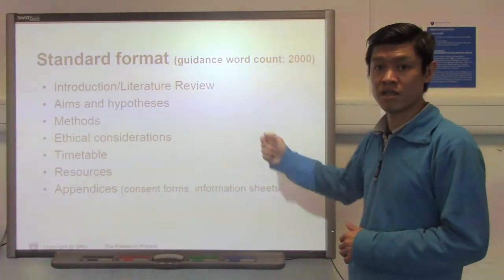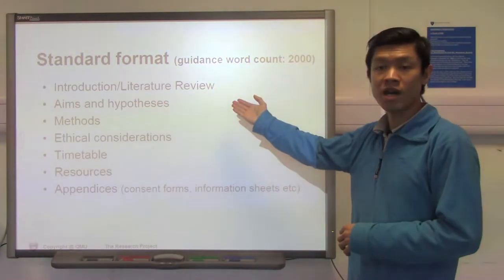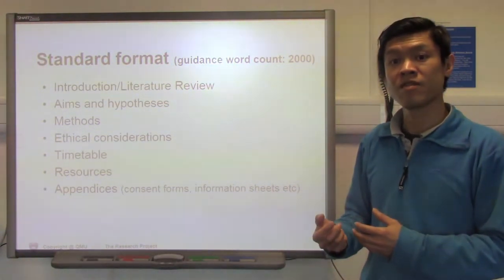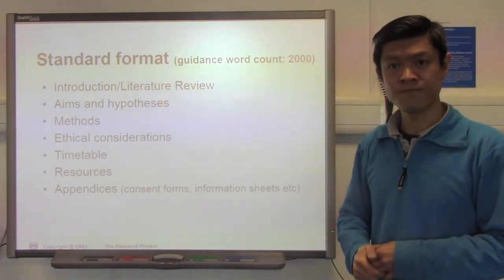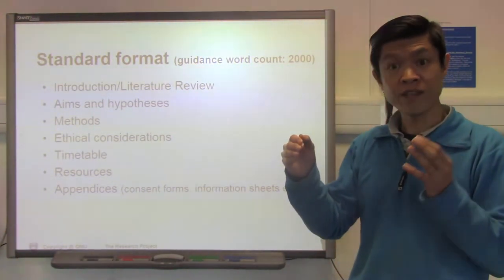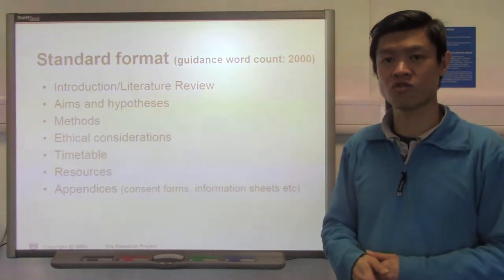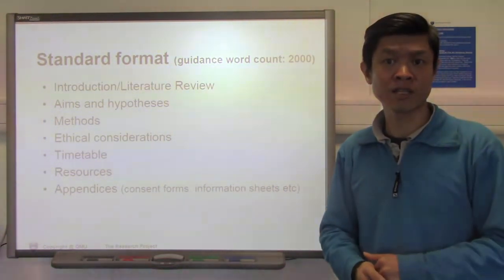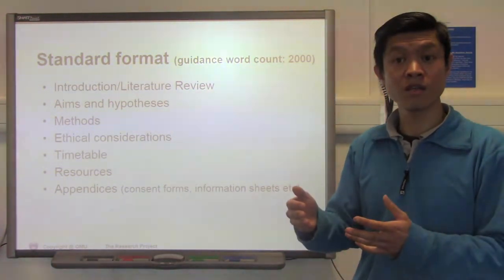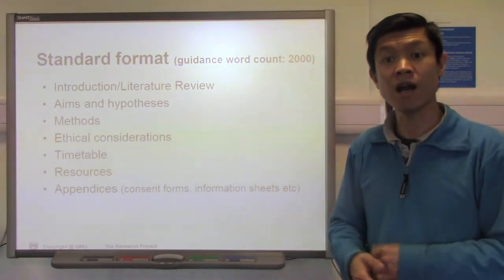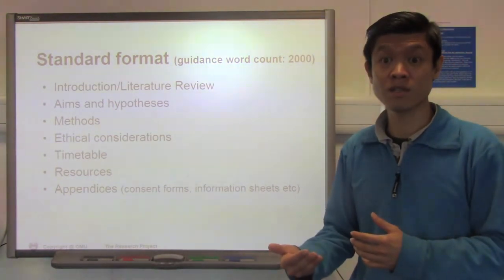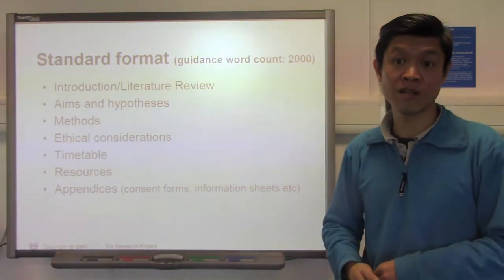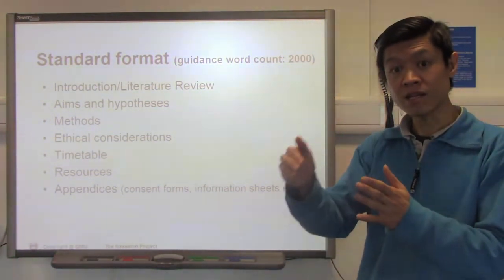The standard format of a proposal begins with the introduction, literature review, and background. This summarizes some of the most important research surrounding the area that will then justify and support your research question. A lot of students tend to go heavily on epidemiology and etiology of the clinical condition they're interested in — sometimes this takes too much attention away from what you're trying to address. You should put a little bit of the epidemiology and etiology, more of the clinical context, and then some of the key research done in the area before. If not much has been done, take parallel research from similar areas. That should link directly to your research question.